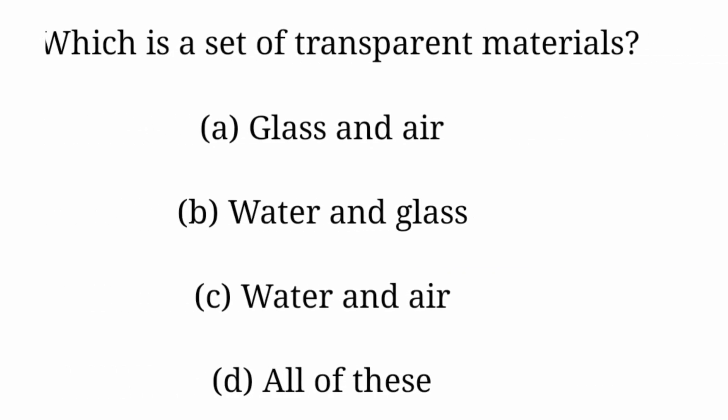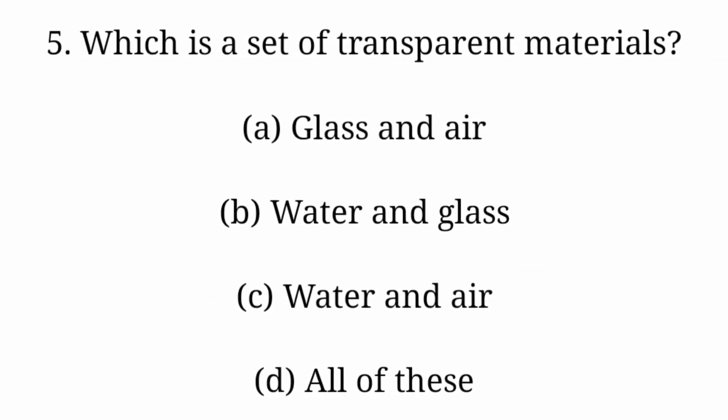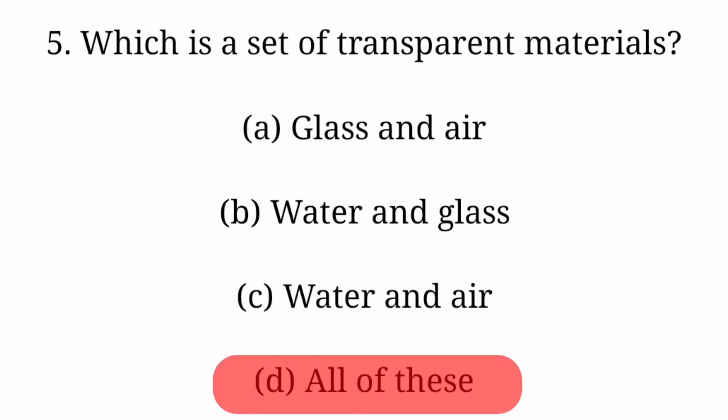Question 5: Which is a set of transparent materials? Option A: Glass and air. Option B: Water and glass. Option C: Water and air. Option D: All of these. Answer is Option D: All of these.